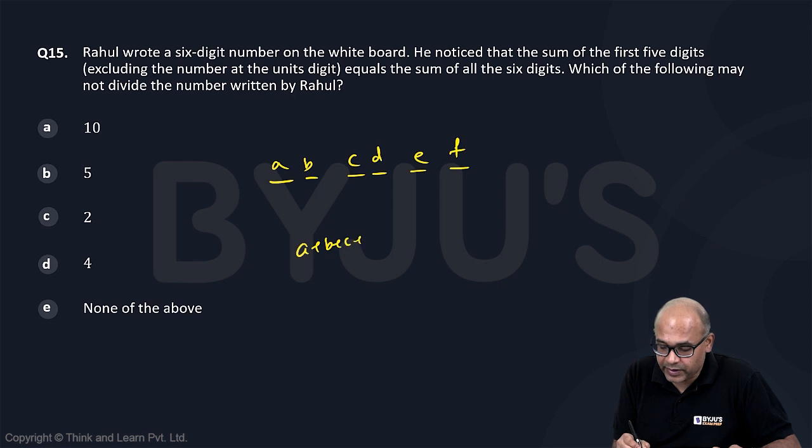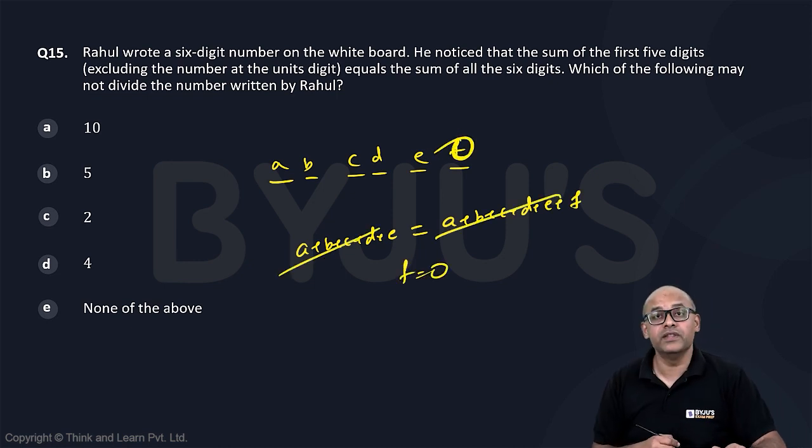He's saying that A plus B plus C plus D plus E is equal to A plus B plus C plus D plus E plus F. This is only possible if F is zero. So this F is zero.